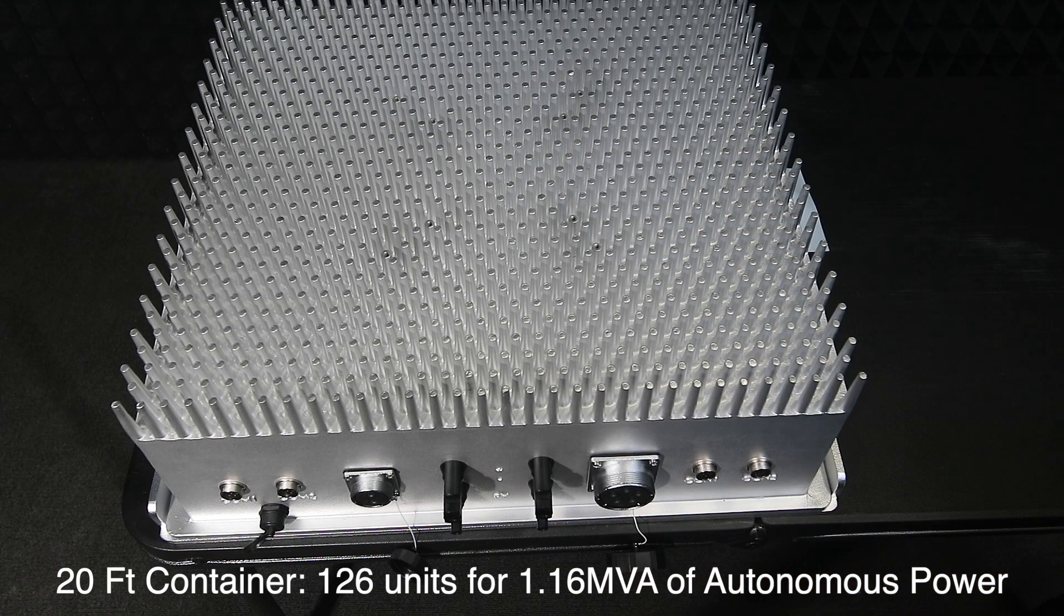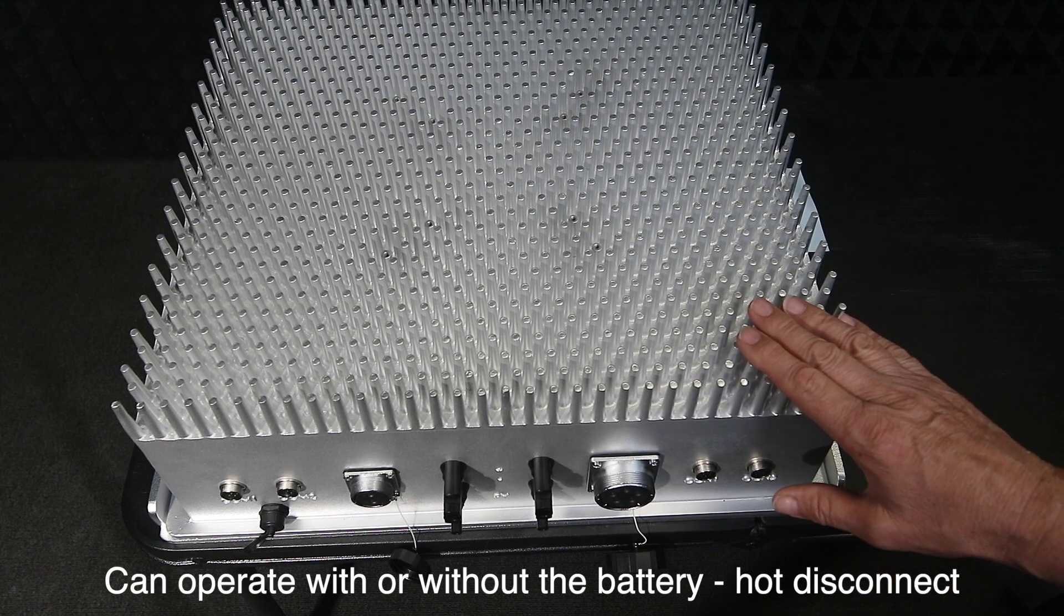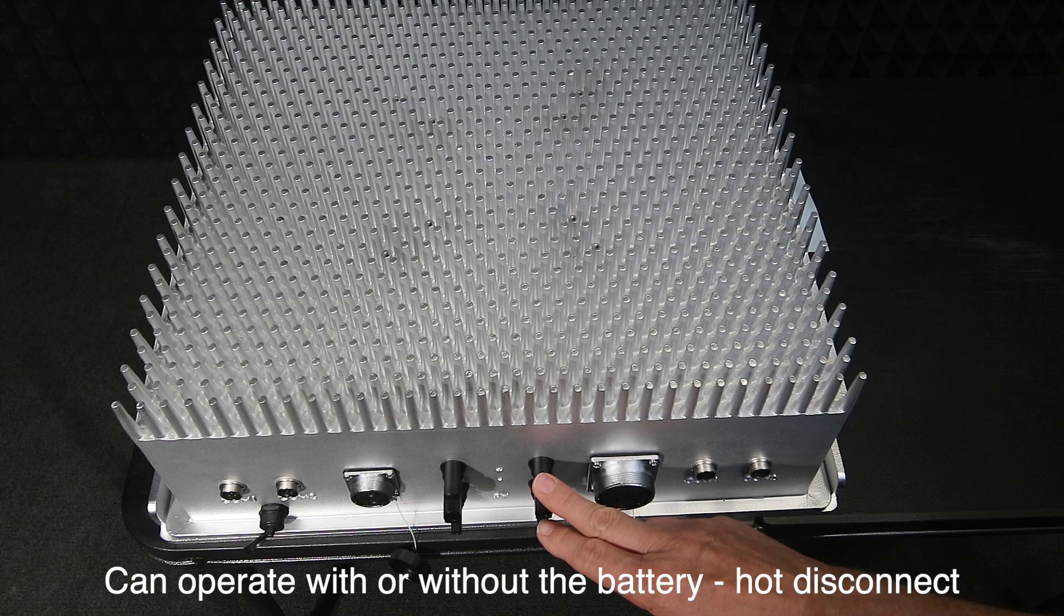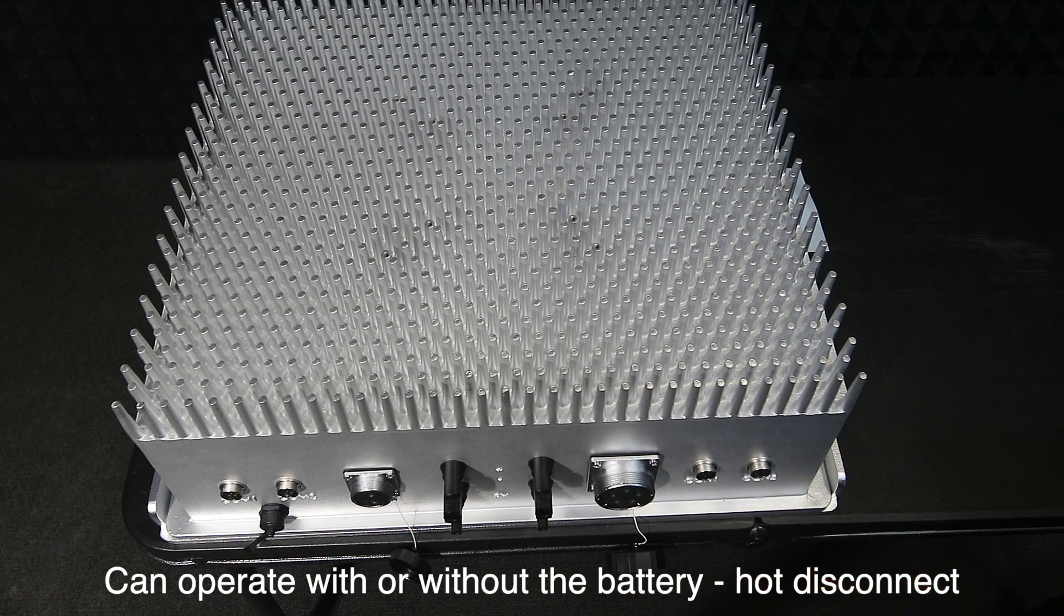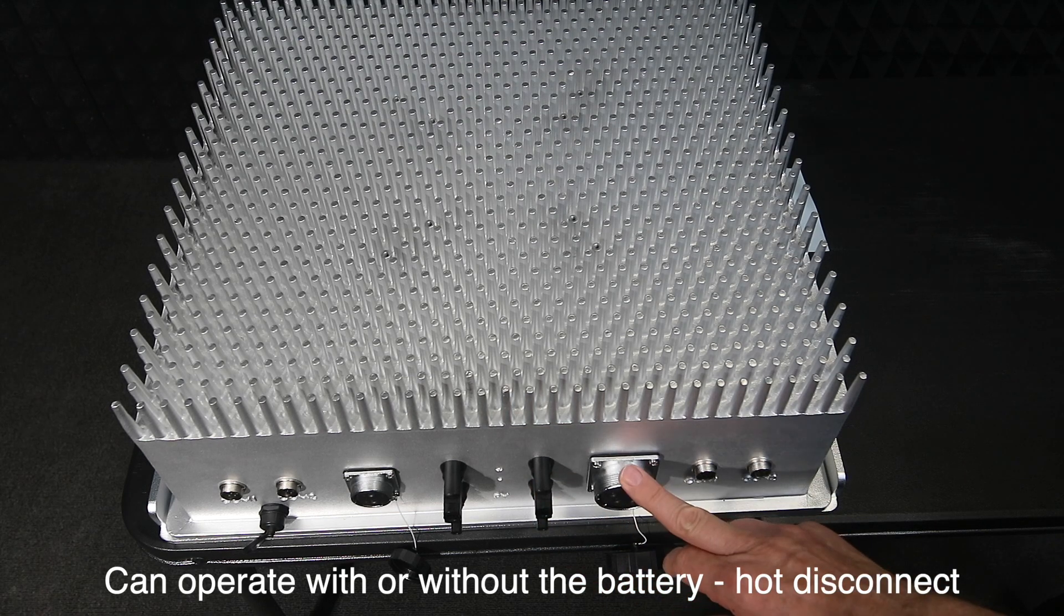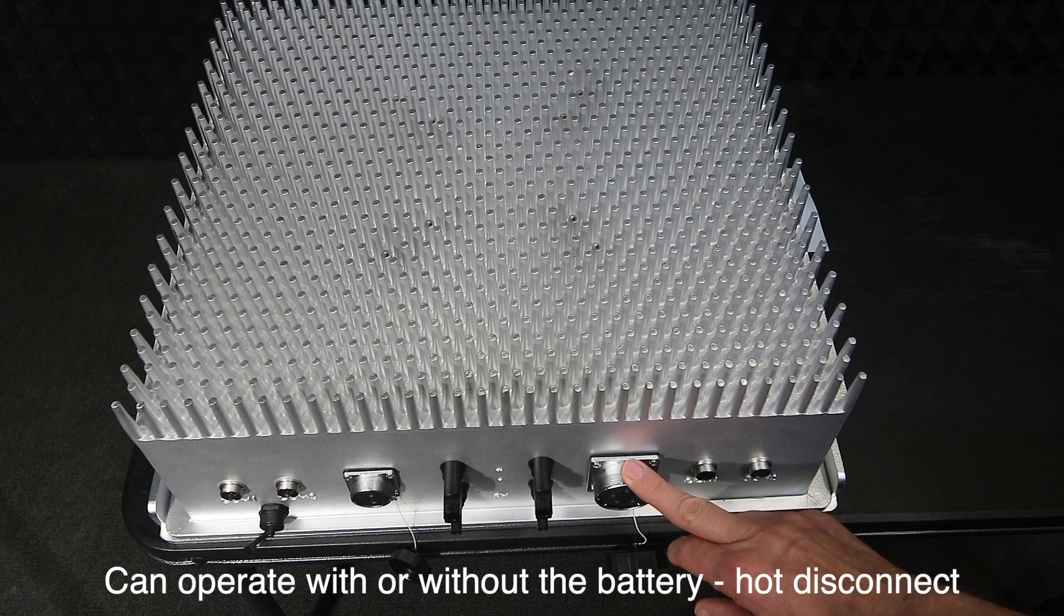First thing is, you can take the battery off while it's running and it'll continue to run. So it'll run with or without the battery, providing it's got power coming in from the solar or if it's grid-connected. That's a perfect scenario with a genset—the genset can cut in and out.